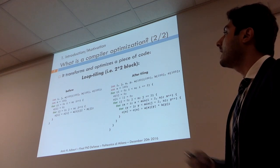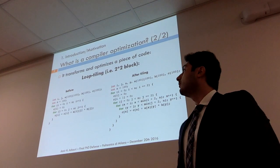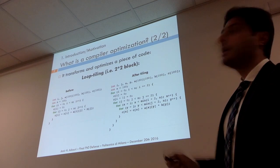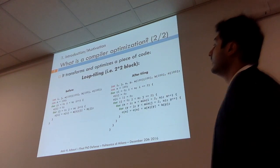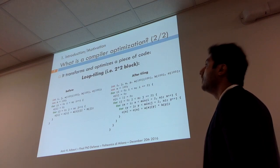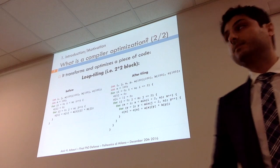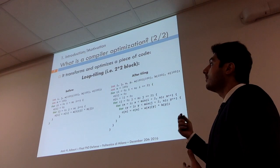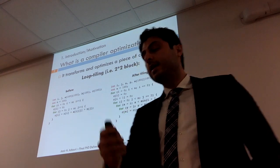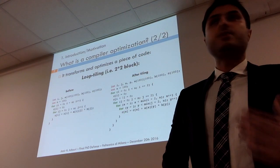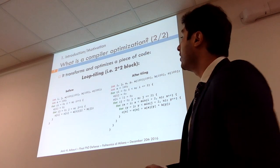Another example is loop tiling. Here, instead of looping over two dimensions (i and j), which leads to cache misses and memory locality problems, we tile it into two blocks. After tiling, we go tile by tile and use more of the memory locality. The most important thing about compiler optimization is that 'optimization' is a misnomer — sometimes when we apply an optimization we end up with worse code that performs much worse than before.